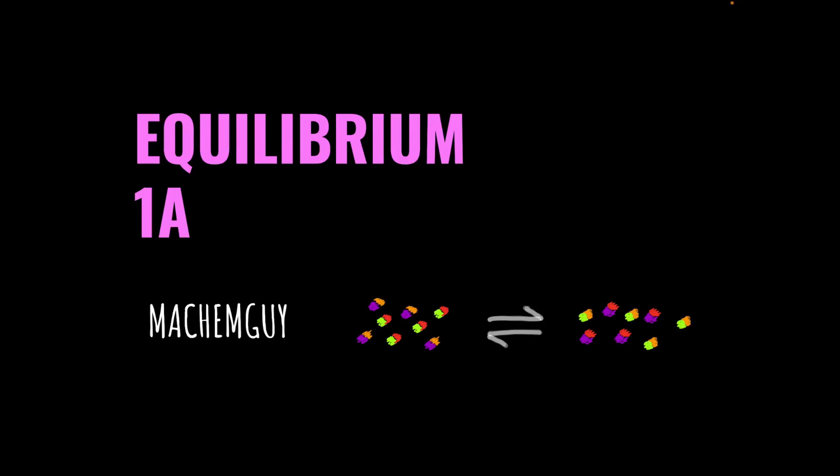Got a new batch of exam question walkthrough videos, so this topic is equilibrium. I'll just quickly explain the code, so if there's an A after the number, like there is in this one, it's going to have a more qualitative approach